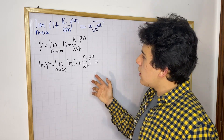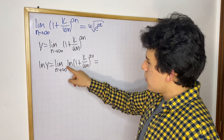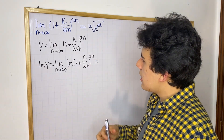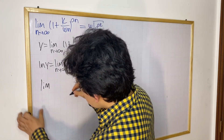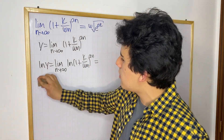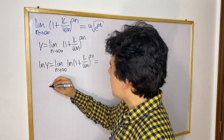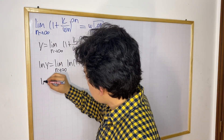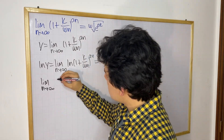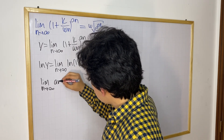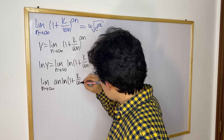There is also another property of logarithms that allows us to move this exponent an to the front of ln — we can multiply ln by an. So we're going to have the limit as n approaches infinity of a·n times the natural log of (1 plus k over wn).